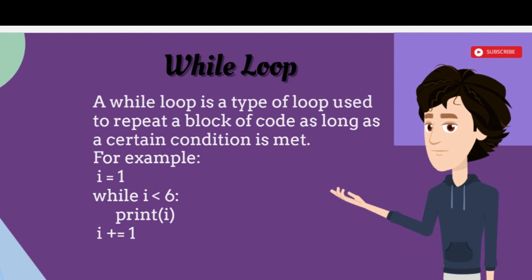While loop. A while loop is a type of loop used to repeat a block of code as long as a certain condition is met. For example: i = 1. while i < 6: print(i). i += 1.